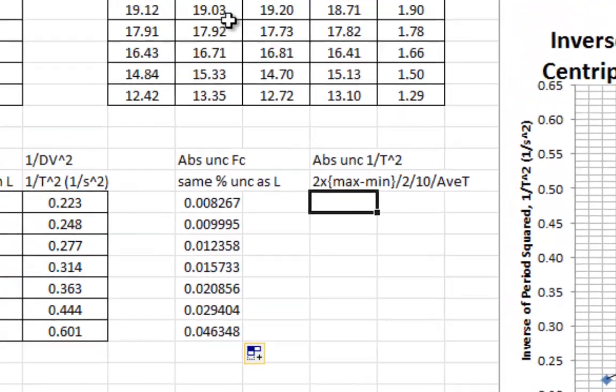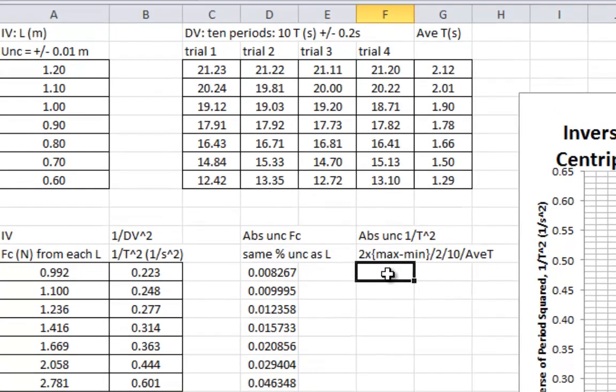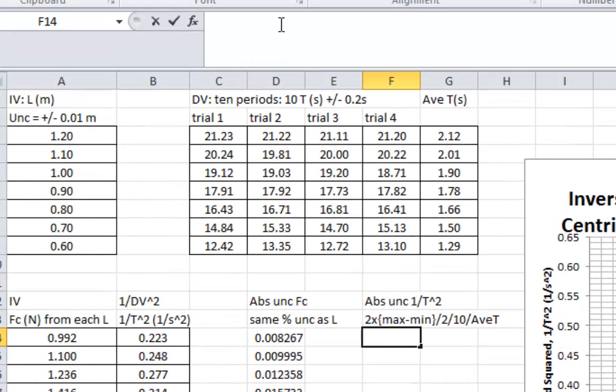We divide again by 10 because each of these values up here is 10 periods. We then divide by the average, and then finally we multiply by 2 because we're squaring things. And again, there are some rules here that you might have to review really quickly.